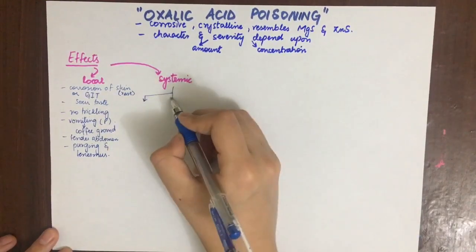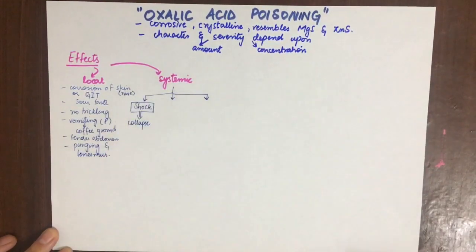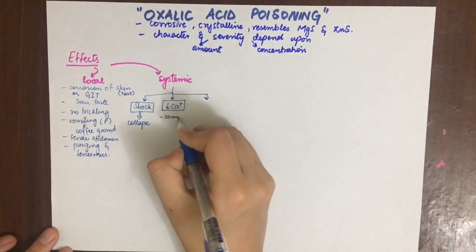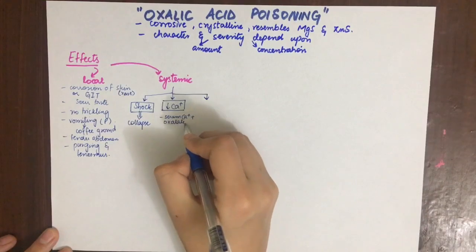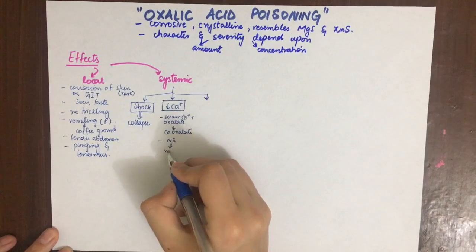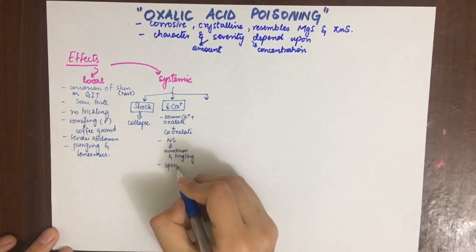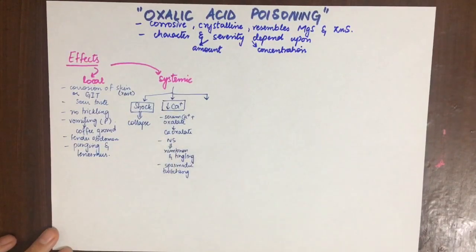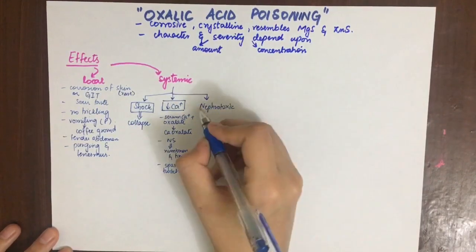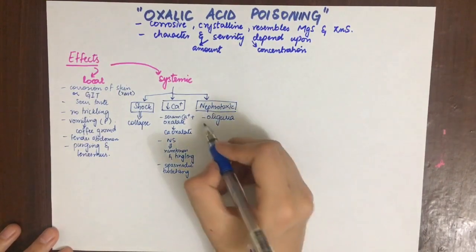The systemic effects can be one of three things. First, shock which leads to collapse. Second, hypocalcemia — this occurs because the serum calcium reacts with oxalate forming calcium oxalate, thus depleting serum calcium. This results in tetany-like symptoms, numbness, tingling, and spasmodic twitching of muscles of the face and extremities. Third, it is also nephrotoxic, meaning it causes oliguria, and albumin, blood, and calcium oxalate are present in urine.